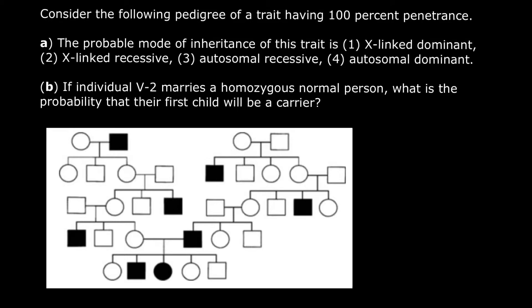I want to cross out autosomal dominant right away, and also X-linked dominant. Because if we have a dominant genetic disorder caused by one dominant allele, we are not going to see that this genetic disorder skips generations like here. It skips this generation completely and reappears in the next generation.